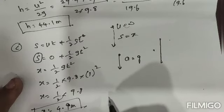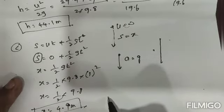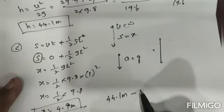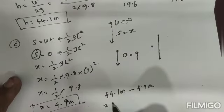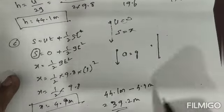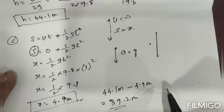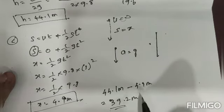The height from the bottom is total height minus the distance fallen from the top. That is 44.1 meters minus 4.9 meters, which equals 39.2 meters. So after the 4th second, the object is at 39.2 meters height from the bottom.